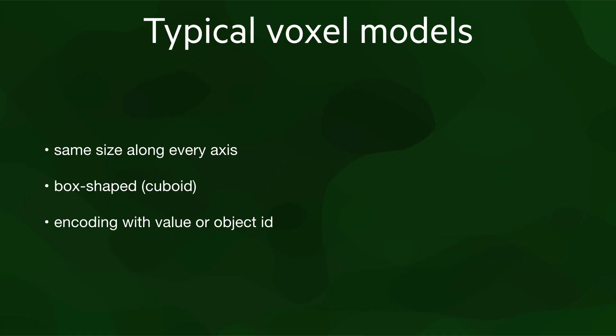At this point, let's summarize what are the characteristics of the typical voxel models. The voxels are the same size along every axis, the voxels are cuboids, that is box-shaped, and the voxels are encoded linearly as a list of values or object IDs.